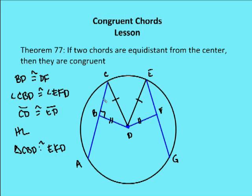And if I know that's true, then I know CB is congruent to EF. If CB and EF are congruent, I know that BA and FG are congruent, because BA is congruent to CB. Remember that the segment from the radius that represents the distance between the center and the chord is a perpendicular bisector of the chord. So if CB is congruent to EF, then BA and CB are congruent, FG and BA are congruent, so CA and EG are congruent.